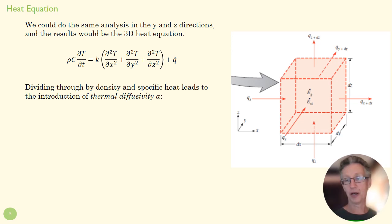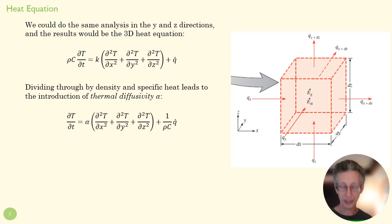Now, dividing that through by density and specific heat—remember we want to have a temperature equation, so we want to move this all to the other side of the equation—introduces an idea of thermal diffusivity, and we mentioned this in an early lecture, but here's where it sort of shows up as alpha here.